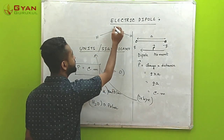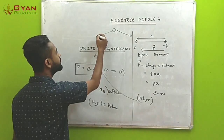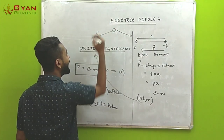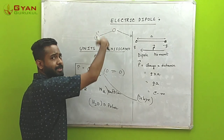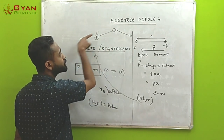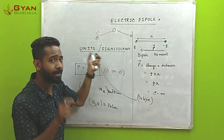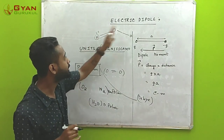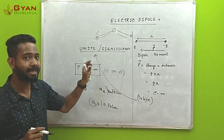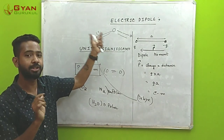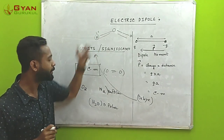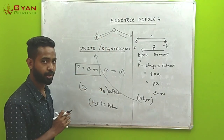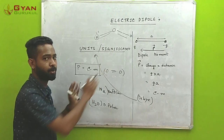In H2O, oxygen is highly electronegative while hydrogen is relatively positive. All electrons of hydrogen are attracted towards oxygen due to its high electronegativity, so the dipole moment points from hydrogen to oxygen. Since the net dipole moment adds up to a non-zero value, water is a polar molecule, while O2 is non-polar. That is the physical significance of dipole moment.